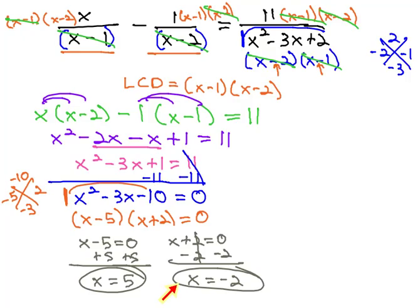Let's test the negative 2. Negative 2 minus 1 is negative 3, and negative 2 minus 2 is negative 4. Because neither factor is equal to 0, this also is an acceptable solution.